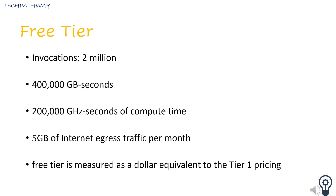Cloud Functions provides a perpetual free tier for compute time resources, which includes an allocation of both GB-seconds and GHz-seconds. In addition to the 2 million invocations, the free tier provides 400,000 GB-seconds, 200,000 GHz-seconds of compute time, and 5 GB of internet egress traffic per month. The free tier is measured as a dollar equivalent to the tier 1 pricing listed in the table.